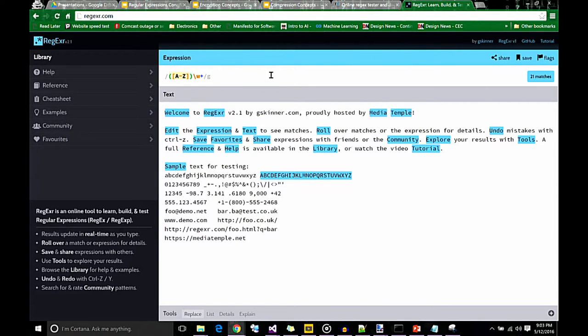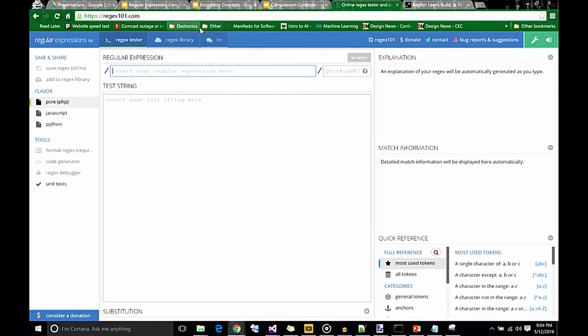The expression is any character from A to Z capitalized as a group, and then slash W for words. Plus means one or more. So it's looking for a capitalized word with any words after that, any letters after that. But it's found all of the capitalized Pascal case words. Make sense?